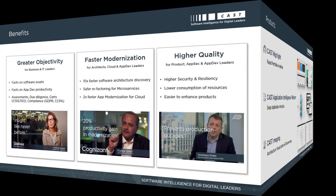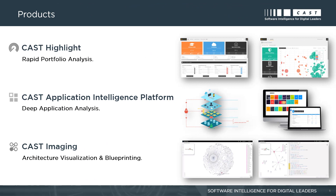CAST has three primary products. First, CAST Highlight for performing rapid application portfolio analysis. Second is CAST AIP, or Application Intelligence Platform, for performing deep application analysis. Third, CAST Imaging, which provides architecture visualization and application blueprinting for complex software systems. All three of these products can be used independently.